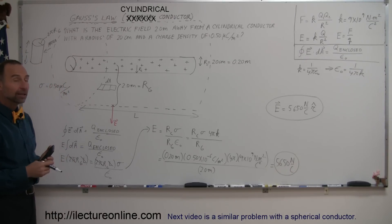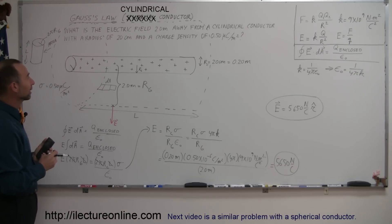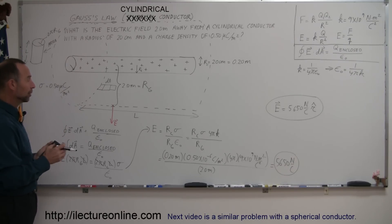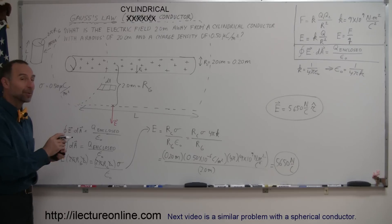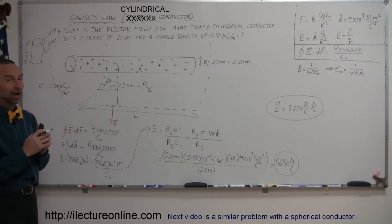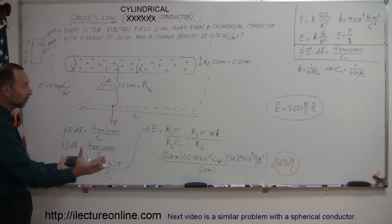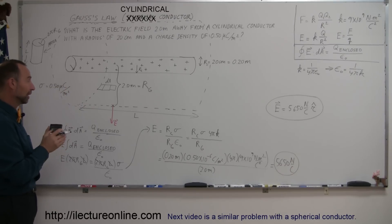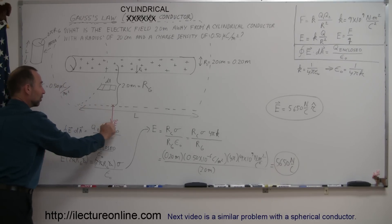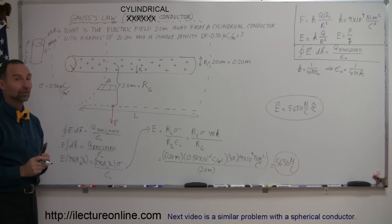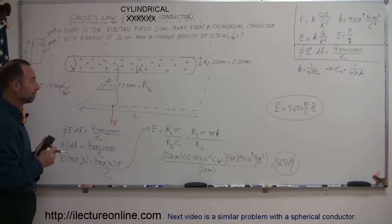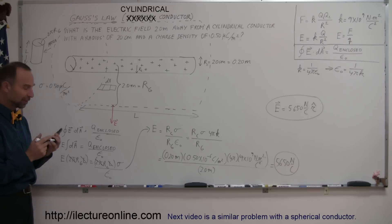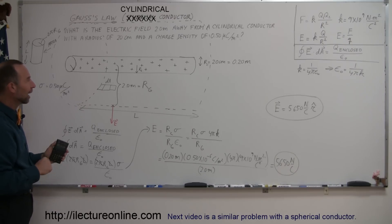Hopefully by seeing a few examples like this, things are starting to make a little bit more sense. I will do a few more examples with different shapes to see how each time you can draw a Gaussian surface around the shape and find the electric field strength at the edge of that surface, which is strategically placed at the location where you're asked to find the electric field. So if you still don't quite get it, take a look at my next video.